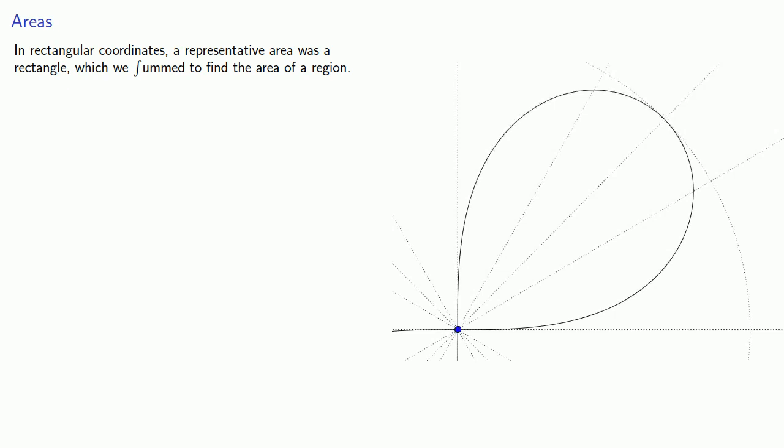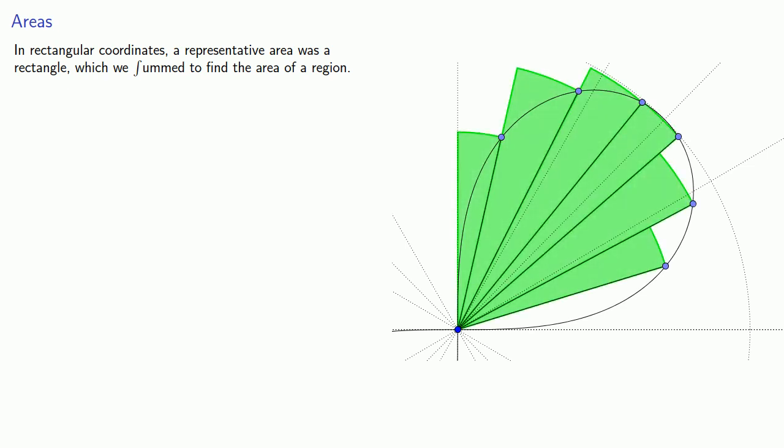So how do we find area in polar coordinates? We'll do the same thing. We'll partition our region into a number of subregions, but this time a representative area is a wedge.